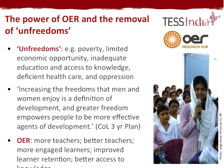I'd like to set the theme for this presentation by referring to Nobel Laureate Amartya Sen, who has great relevance for our research, which operates in the context of international development. Sen states that a key aim for international development is the removal of unfreedoms which limit human beings' potential to fully participate in society. These could include poverty, limited economic opportunity, inadequate education and access to knowledge, insufficient healthcare, and oppression.